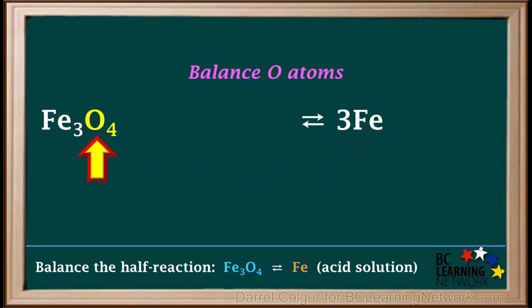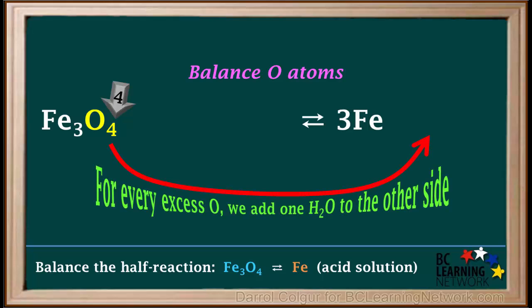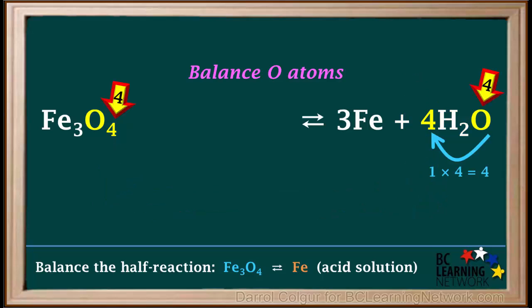Our next step is to balance oxygen atoms. We have four oxygen atoms on the left side and none on the right side. The rule for balancing oxygen atoms is, for every excess O on one side, we add one H2O to the other side. So, we add 4H2O to the right side. Notice that now we have four oxygen atoms on both sides, so oxygen atoms are balanced.